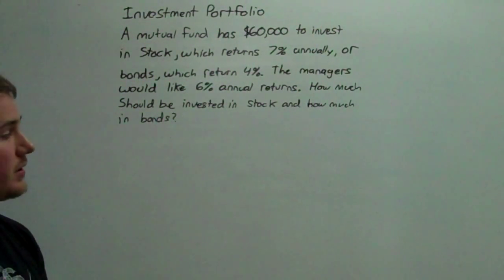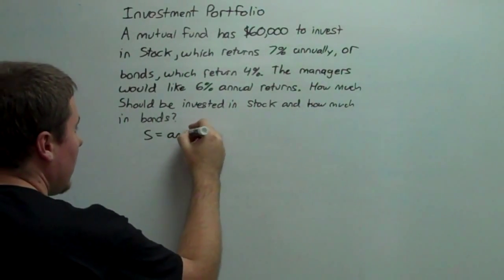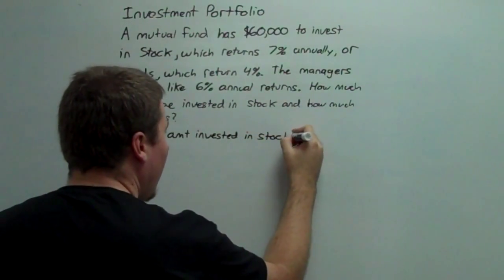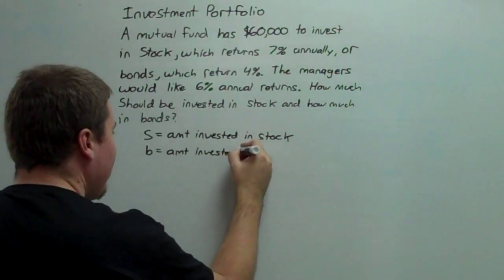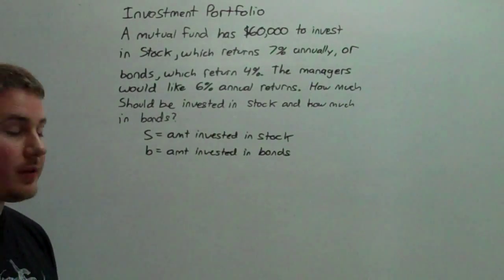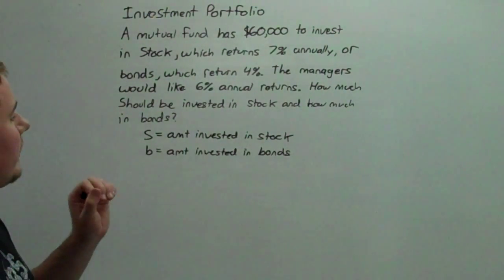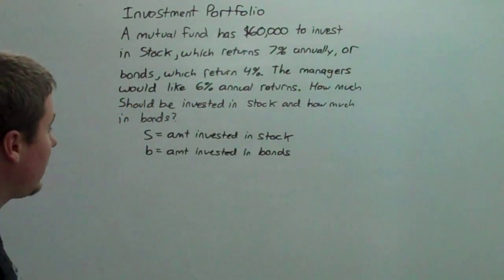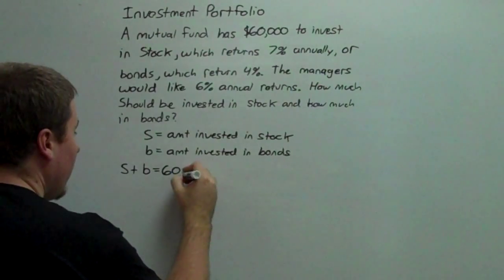Well, two questions gives us two variables. Let's let S be the amount invested in stock and B be the amount invested in bonds. Two variables means we need two equations. The easier one is that the stocks and bonds have to add up to $60,000: S plus B equals $60,000.